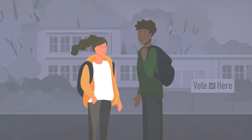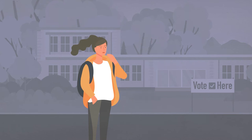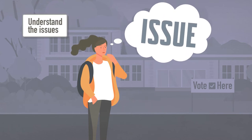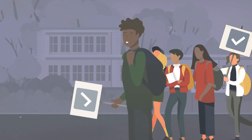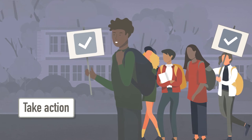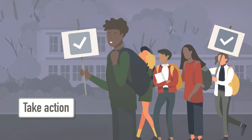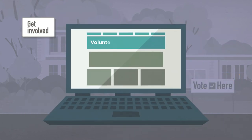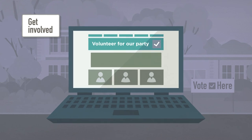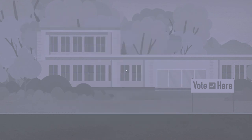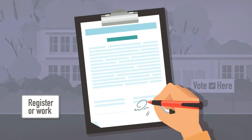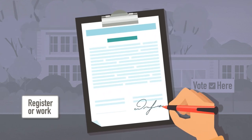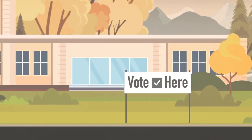Some of you may not be able to vote yet, but there's still a lot you can do. You can think about where you stand, talk with your family and friends, sign petitions, or attend rallies. You can volunteer for a political party, or you may even be able to register to vote or work at an election.